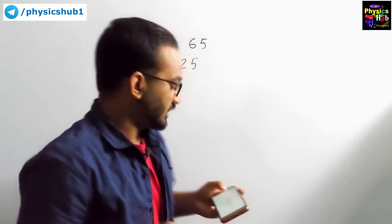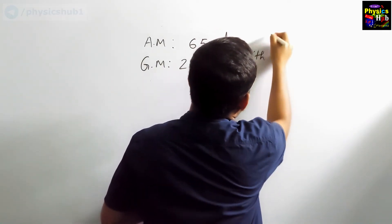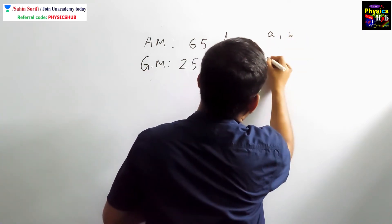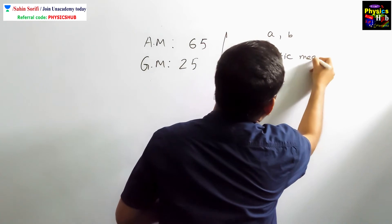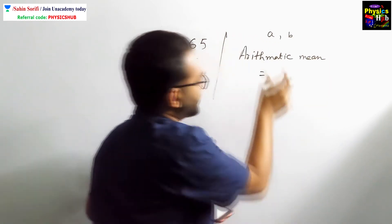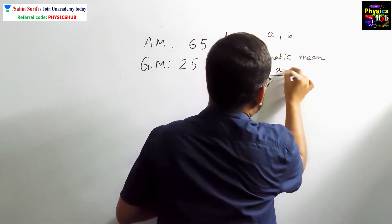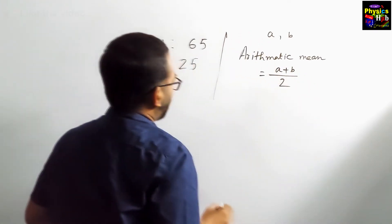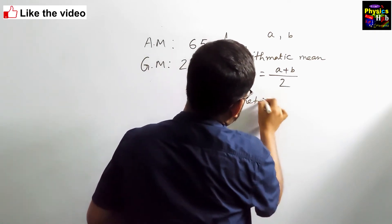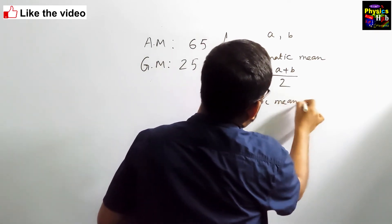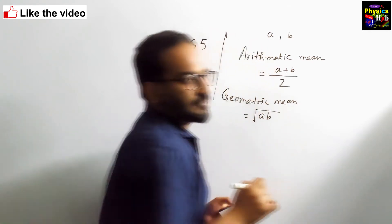First of all, let us recall the formulas. If you have two numbers a and b, the arithmetic mean is (a + b) / 2. On the other hand, the geometric mean of these two numbers is the square root of their product, root over of a times b.